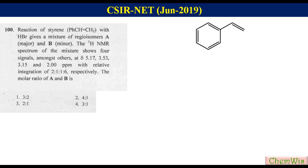Styrene undergoes a decent reaction with HBr to produce Markovnikov product 1-bromoethylbenzene as major product A and 2-bromoethylbenzene anti-Markovnikov product as minor product B.